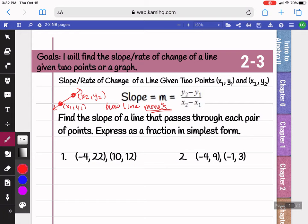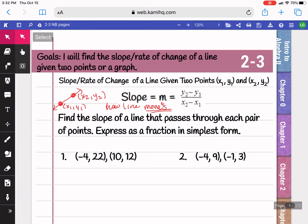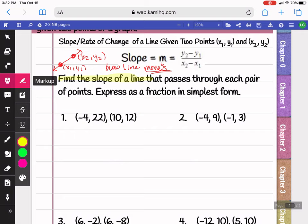The steps for these are very simple. You label your two points, plug into the formula to find your slope or rate. So here we're going to find the slope of a line that passes through these pairs of points. If you have a fraction, make sure you simplify it.